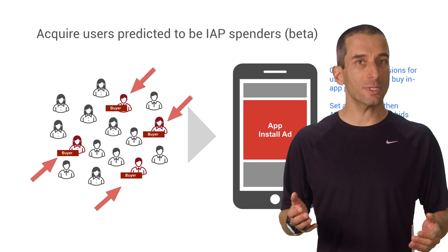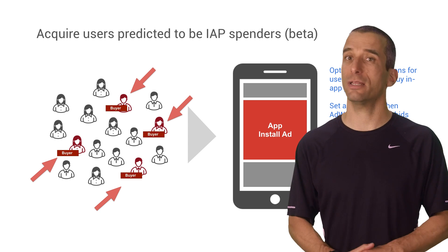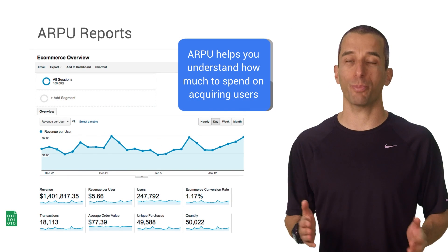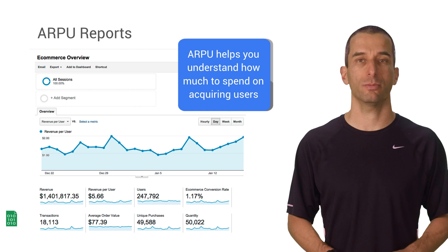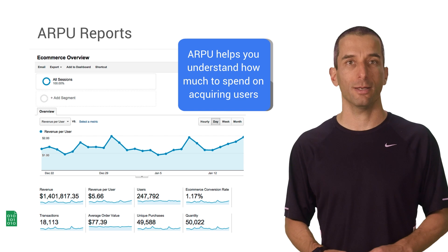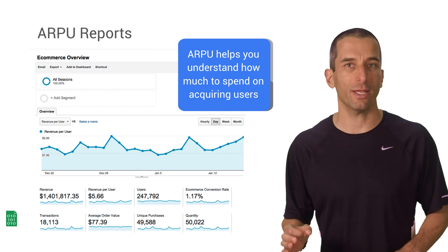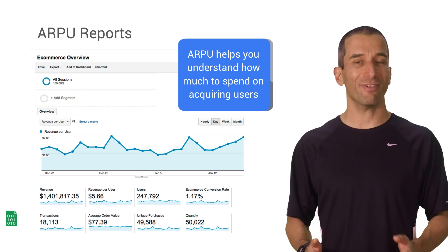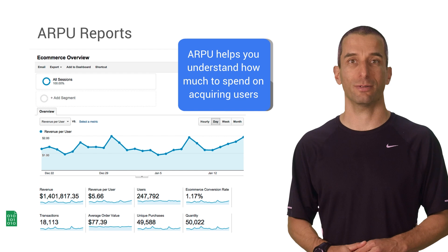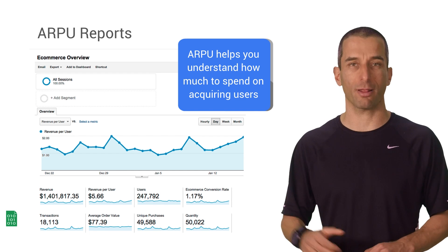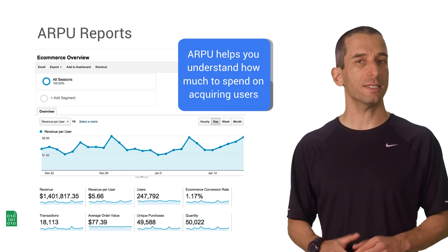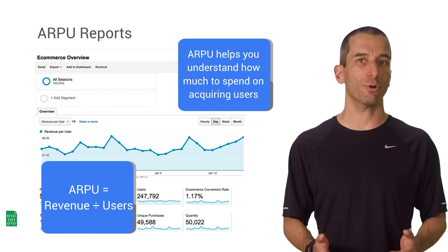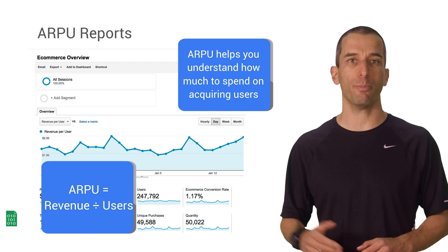In order to use these tools effectively, you need to understand two key terms: average revenue per user and lifetime value. Because you can't manage what you can't measure. Average revenue per user — ARPU if you wish to sound like a pro — is a simple ratio that divides the revenue by the number of users in a time period.